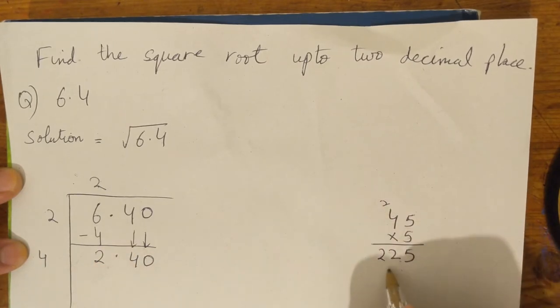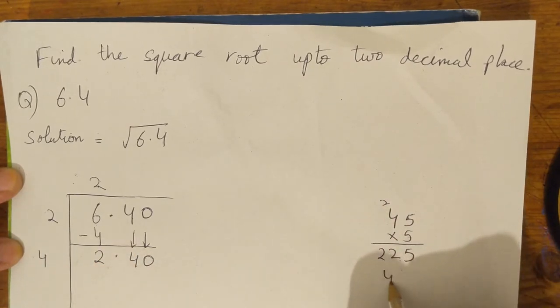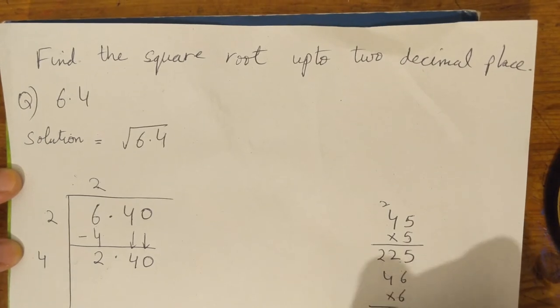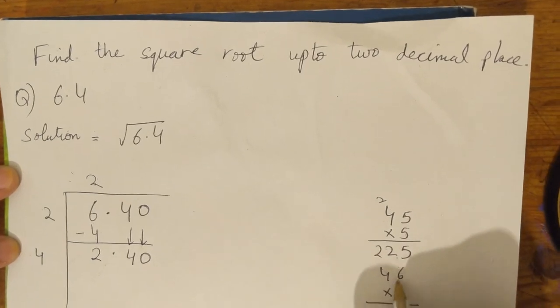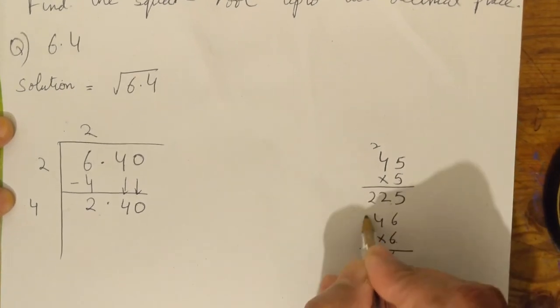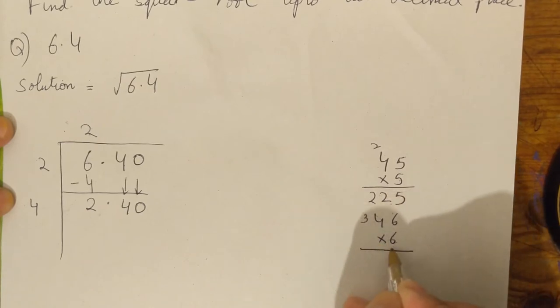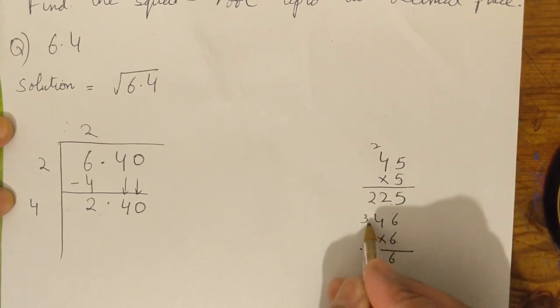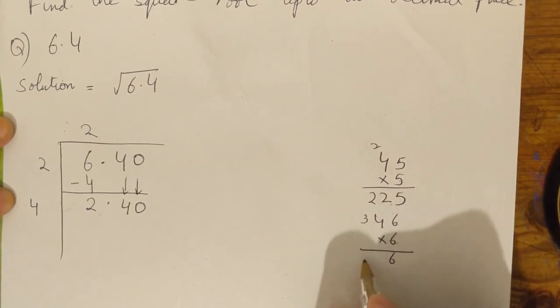Now we will multiply 6 by 6. 6 times 6 is 36, and 3 will come here. 6 times 4 is 24. Then we will add 3. So this will be 27.